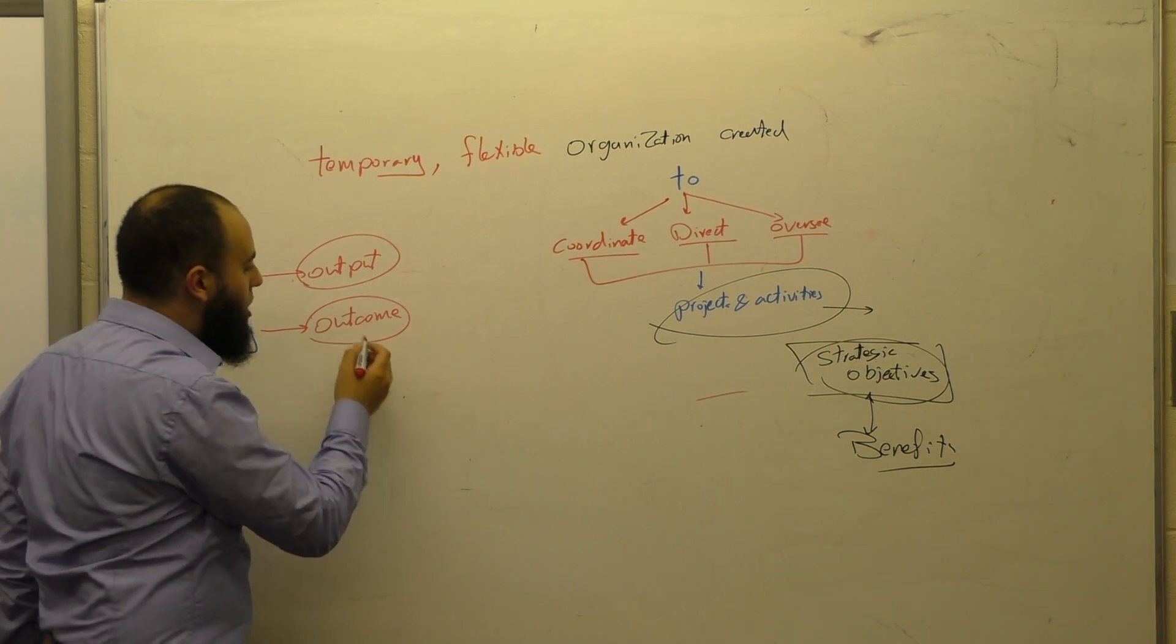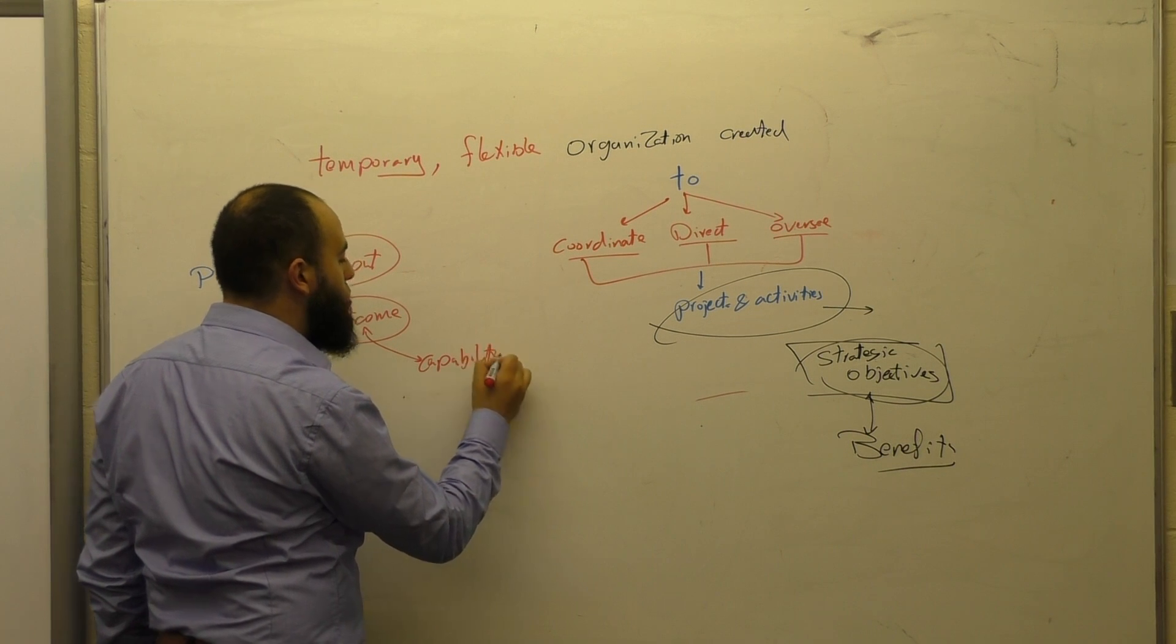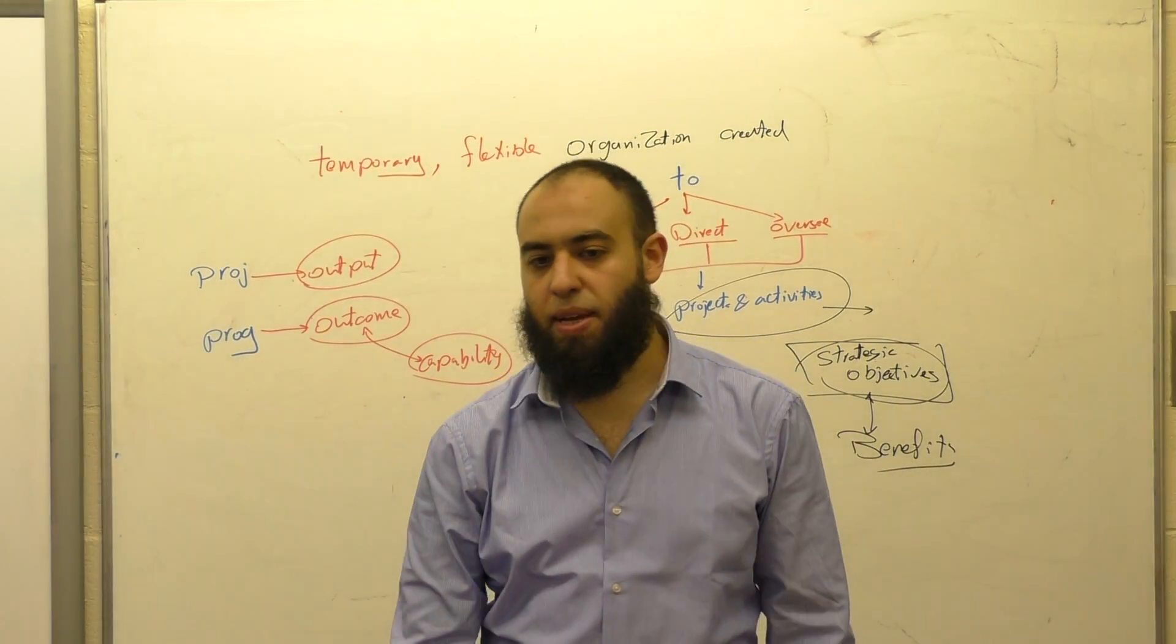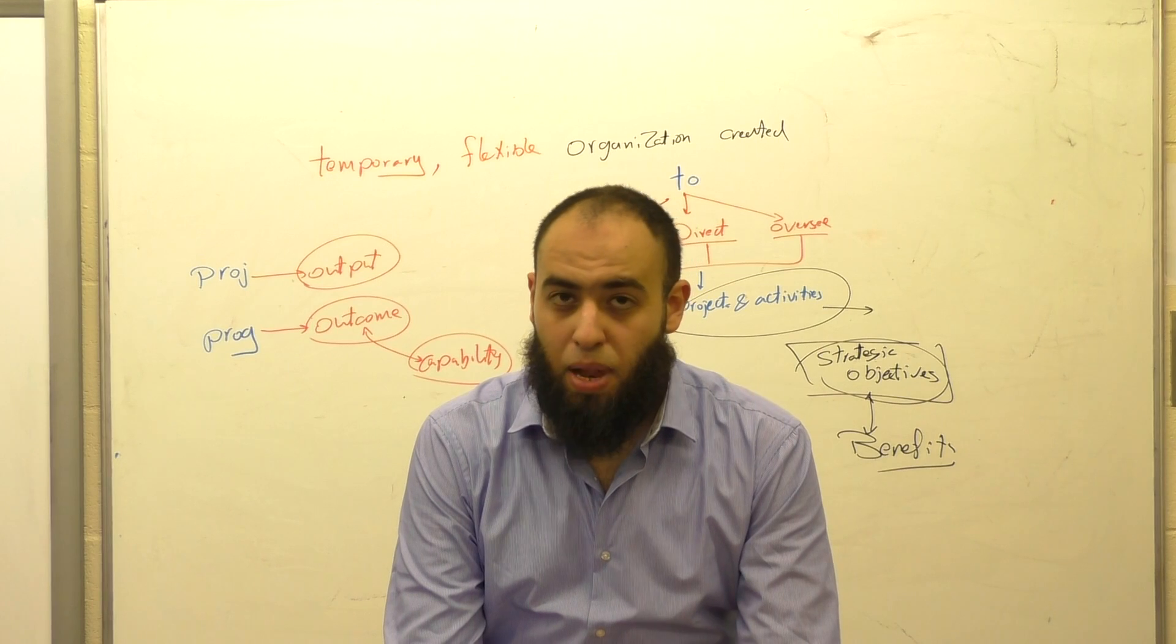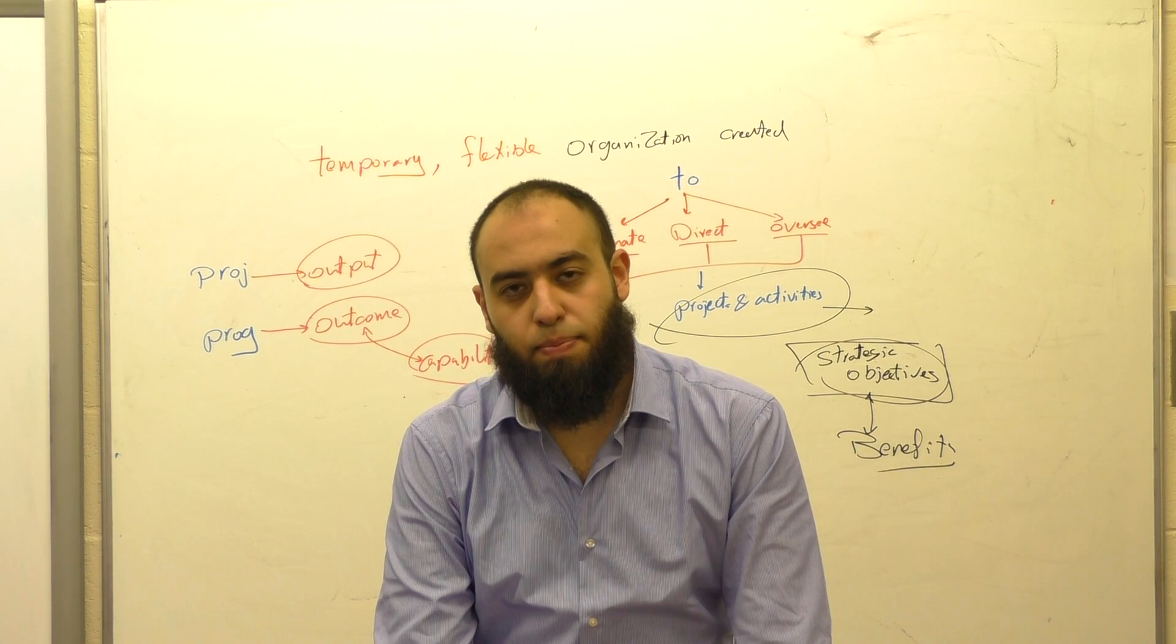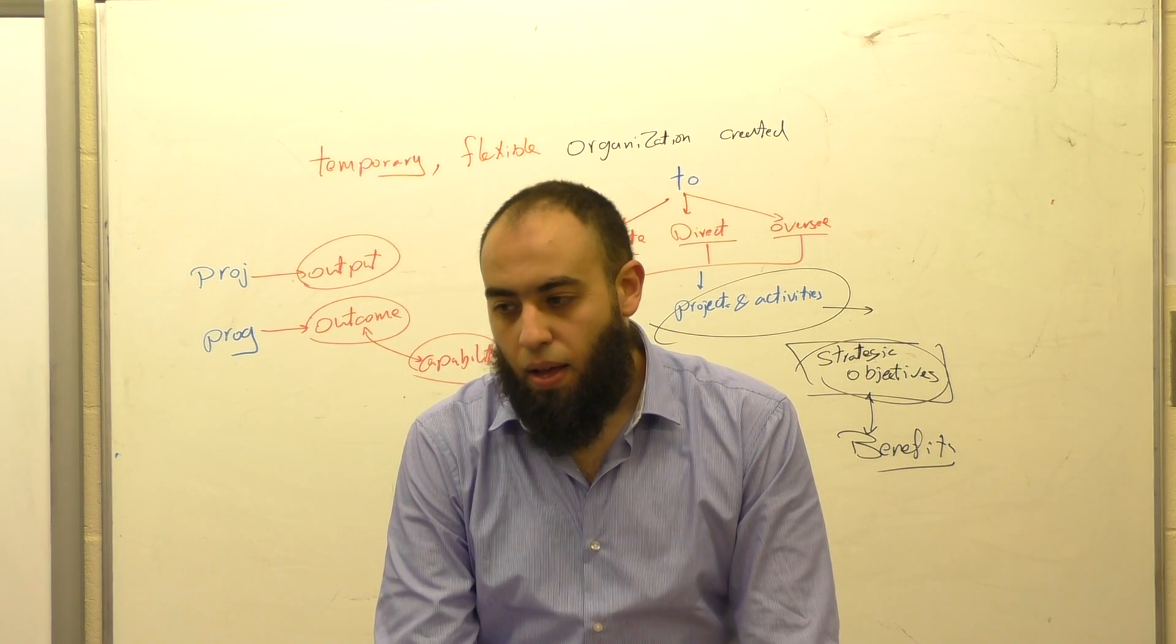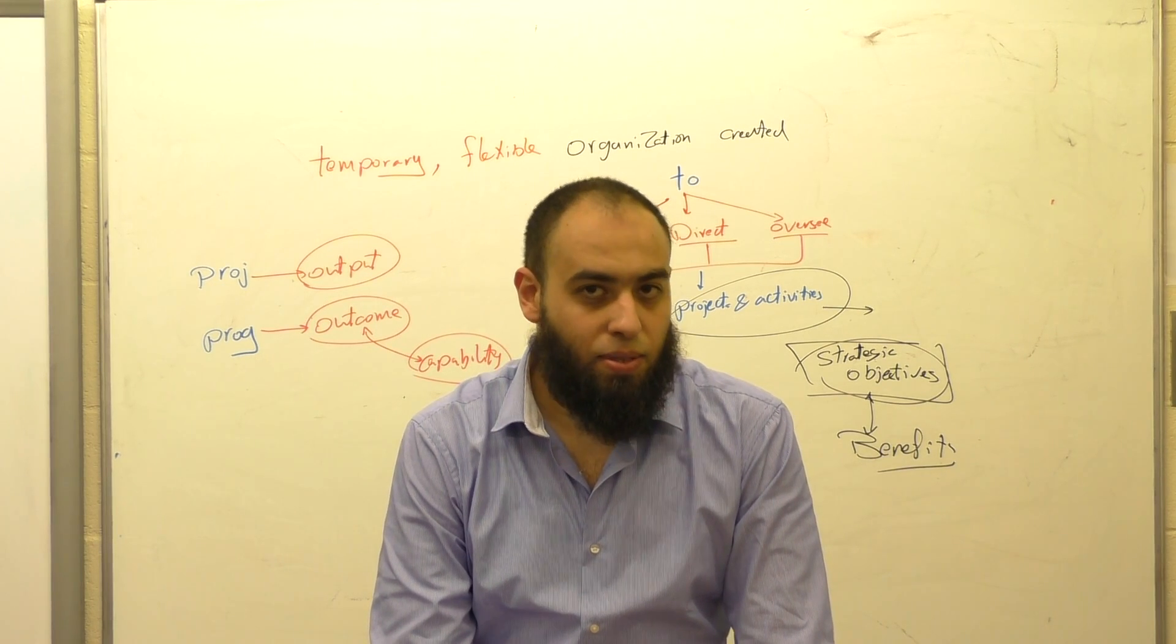We talked about it in the last lecture: outcome, output. Outputs lead to outcome. Outcome, sometimes I prefer to call it capability, which enables me to do something. Usually a project will not help you achieve capability. So implementing ERP doesn't make sense without people knowing how to use it. But implementing Six Sigma is nothing as long as people resist it. So if people don't love what you do, that doesn't make sense.